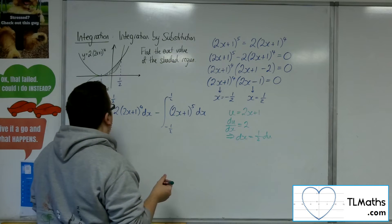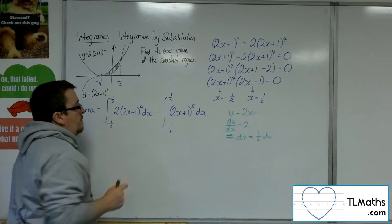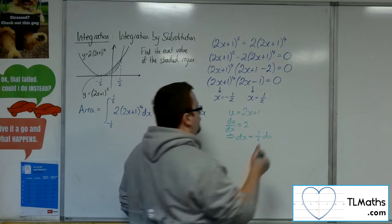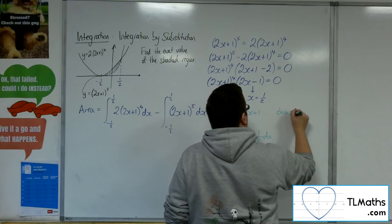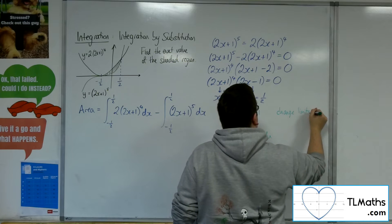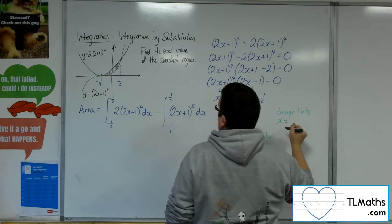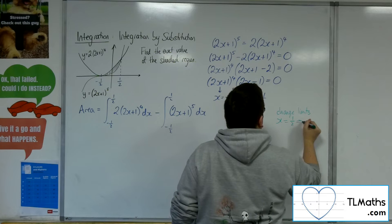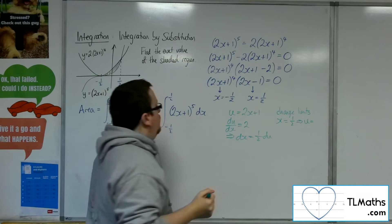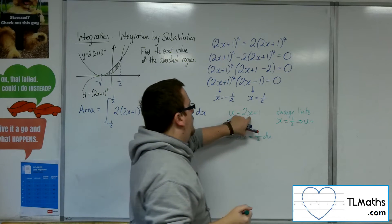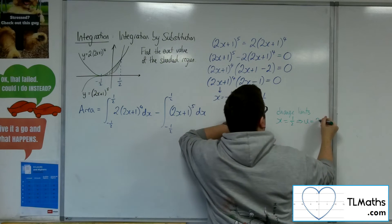So that gives me everything that I need apart from changing the limits. So changing the limits. When x is a half, u would be 2 lots of a half. So 1 plus 1, so 2.